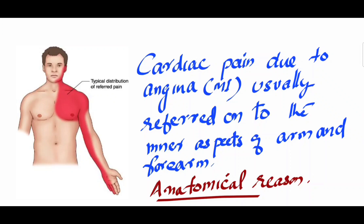Hello friends, welcome to my channel. Today in this video we are going to discuss a question asked in examinations: the cardiac pain due to angina is usually referred to the inner aspects of the arm and forearm. In this picture you can see the cardiac pain is normally felt on the medial side of the upper extremity and also to the neck or jaw.